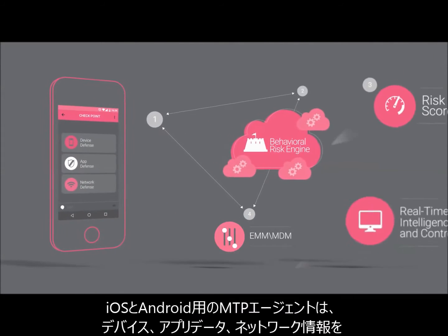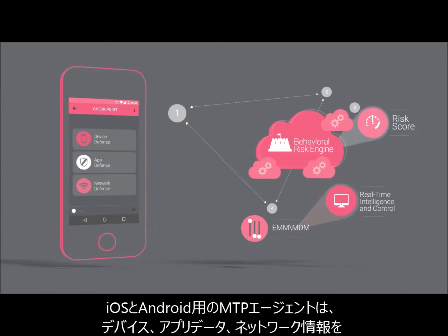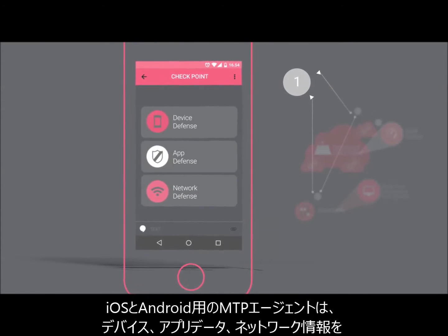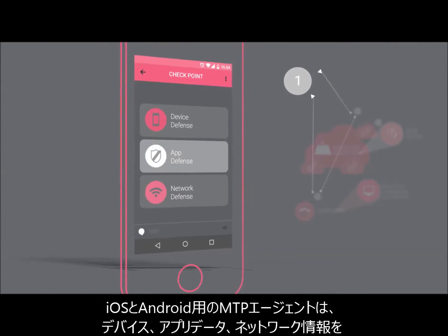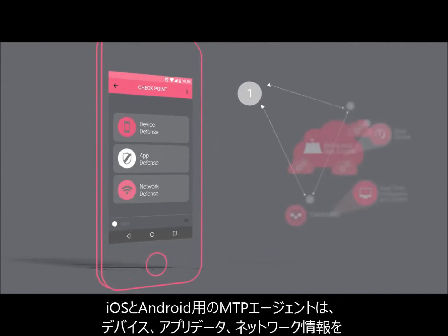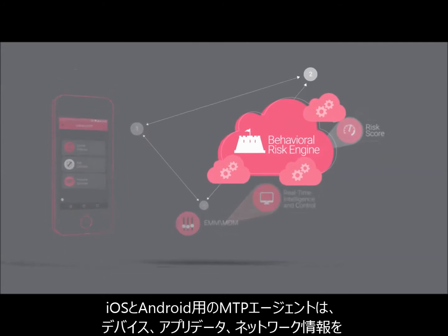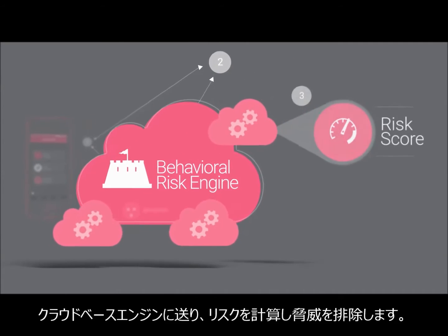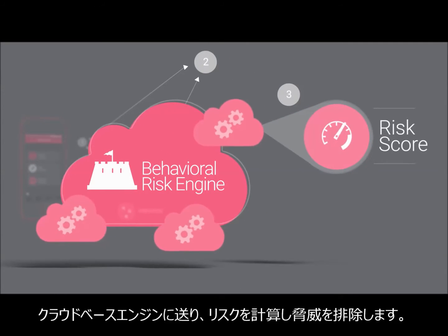The Mobile Threat Prevention app for iOS and Android sends data about devices, apps, and networks to a cloud-based engine that measures risks and mitigates threats.